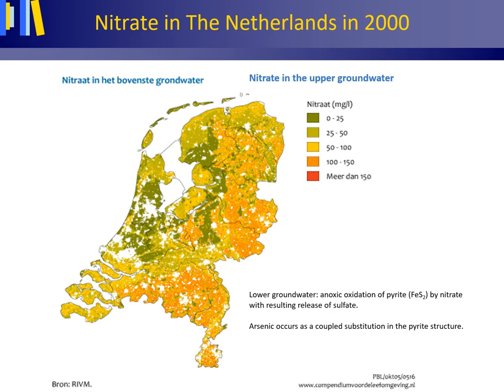Groundwater can be polluted with nitrate from farming activities. In the Netherlands, this led to high nitrate concentrations in the upper groundwater — values from 50 to 150 milligrams per liter for parts of the Netherlands — while in the lower groundwater nitrate levels are low. This has to do with the occurrence of pyrite (iron sulfide) deeper down in the subsurface.